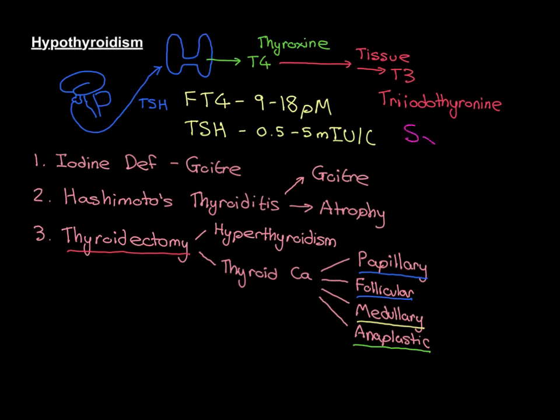So we want to discuss symptoms — when we write 'Sx' like that, that stands for symptoms. In order to understand symptoms we need to understand what thyroid hormones actually do. Once T4 has been converted to T3 and T3 binds to its receptor and alters gene expression, what actually happens? Thyroid hormones affect the function of loads of tissues all over the body, and they alter the basal metabolic rate — the BMR.